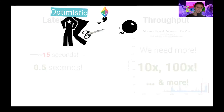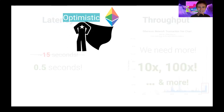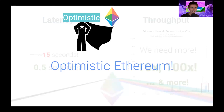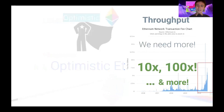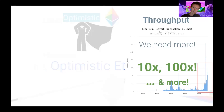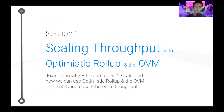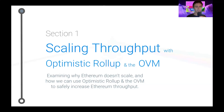We address that with Optimistic Ethereum. We're going to talk about both throughput and latency. First, we'll start with throughput: scaling throughput with optimistic roll-up and the OVM — that's our first section.